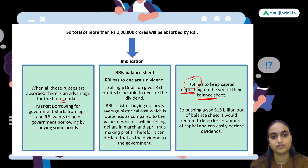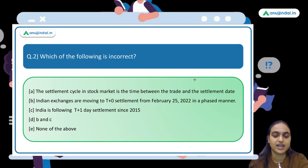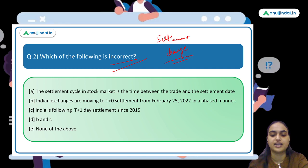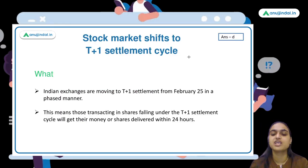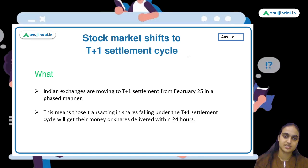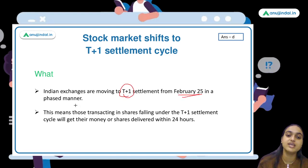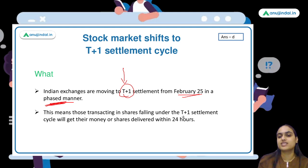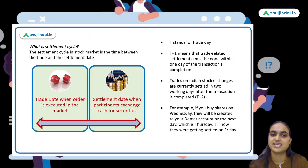That covers the first question. Now let's move to the second question. Which of the following is incorrect? This relates to recent news about stock exchanges changing their settlement cycle. Indian stock exchanges currently follow a T+2 settlement cycle, but they are now moving to a T+1 settlement cycle. From February 25th onwards, this will be implemented in a phased manner.